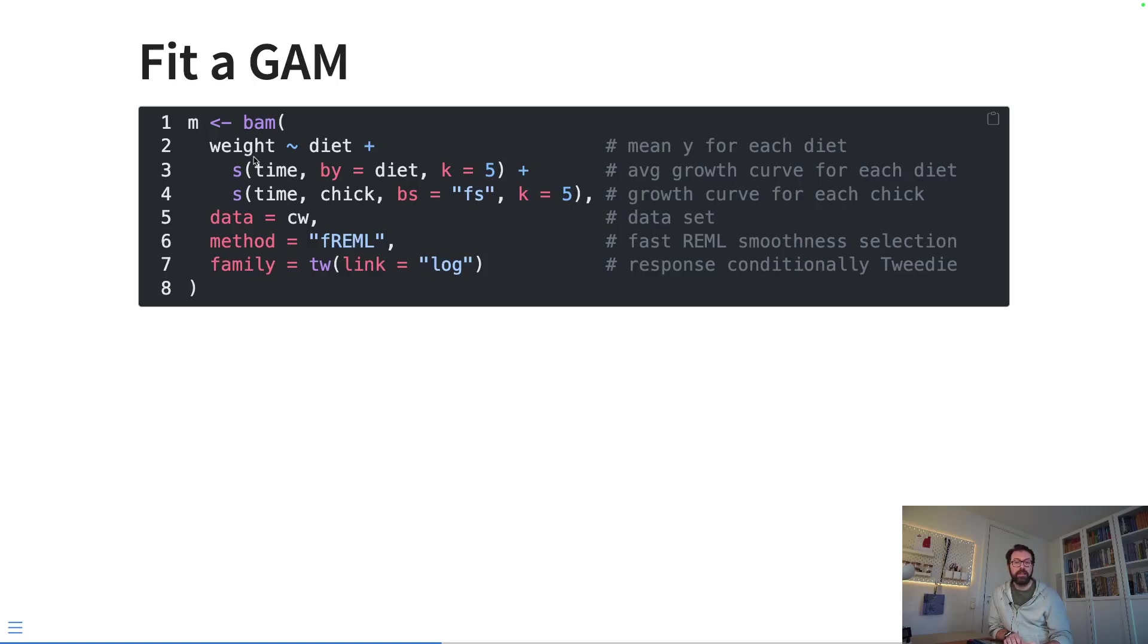So we're going to fit a GAM. We are fitting the weight—that's our response variable. We need to model the average weight of each of the chicks on each of the diets, so we put the group effects of our treatment in here.